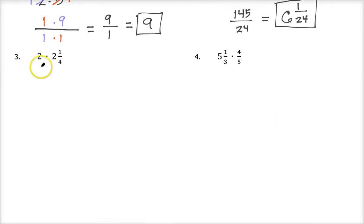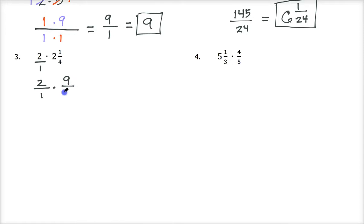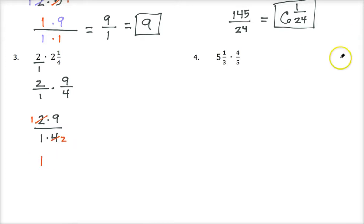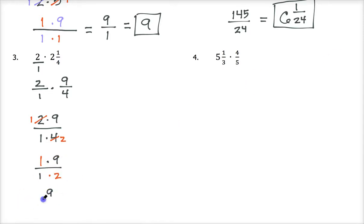Number three: we have the whole number two times the mixed number two and one fourth. Two can be made an improper fraction by putting it over one, so we have two over one times nine fourths. I can cancel my two on the top and my four on the bottom by dividing both by two, giving me one times nine over one times two.